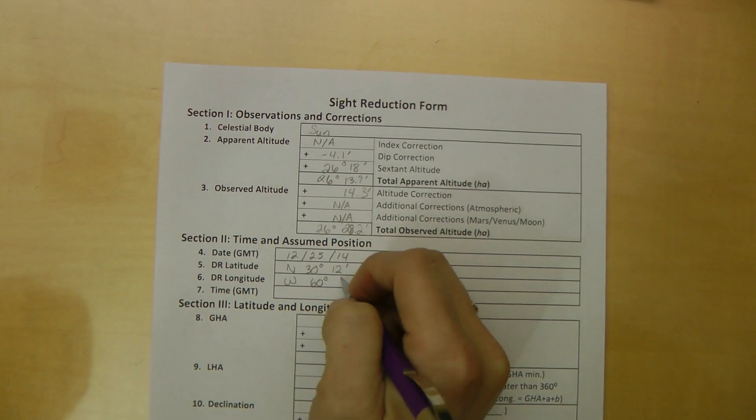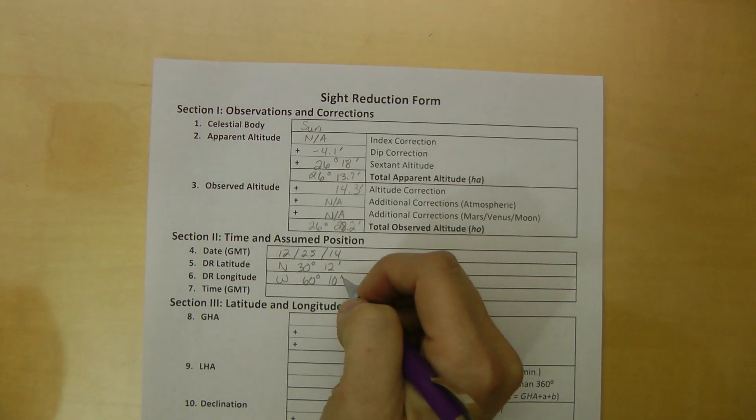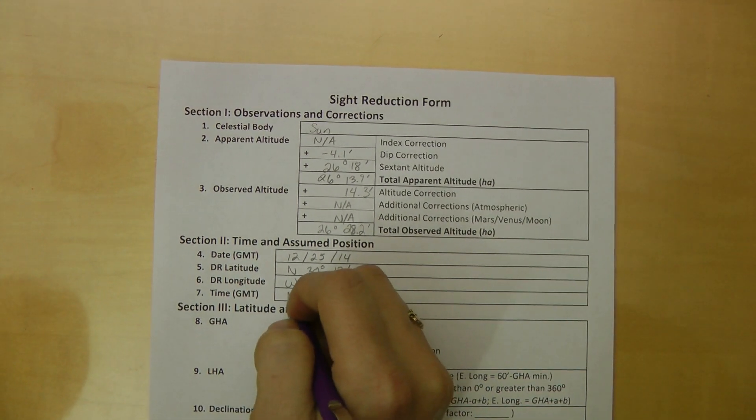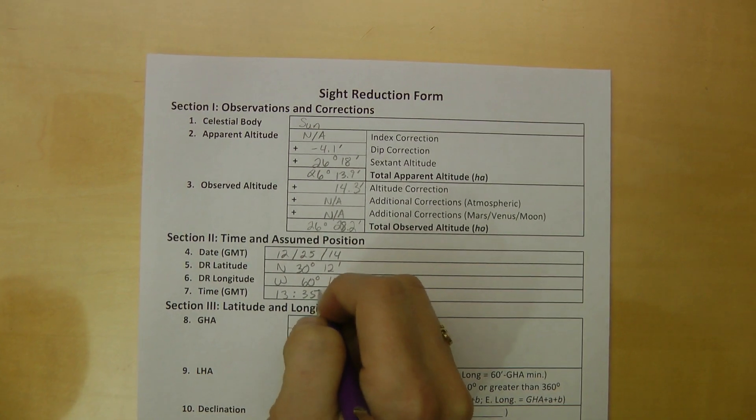In the site reduction form, you'll pick an assumed position usable with the site reduction tables. The assumed position is often different from your dead reckoning.